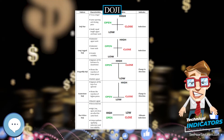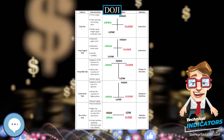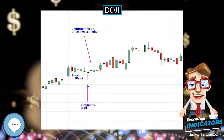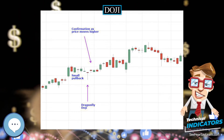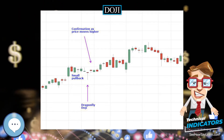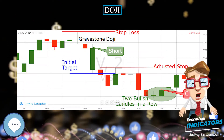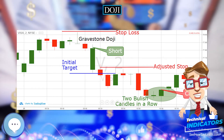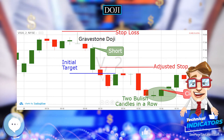The Doji represents indecision in the market. A Doji is not as significant if the market is not clearly trending, as non-trending markets are inherently indicative of indecision.